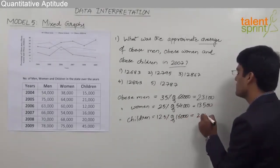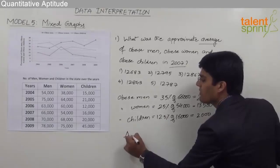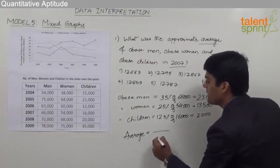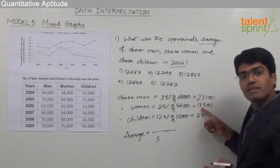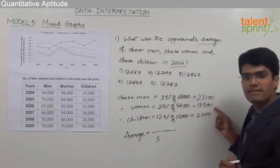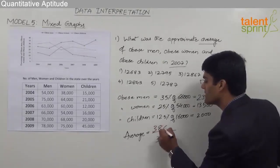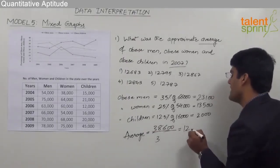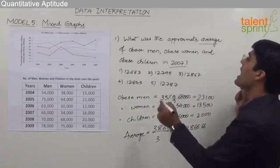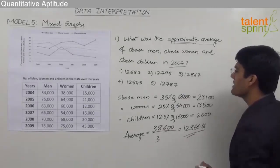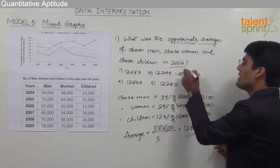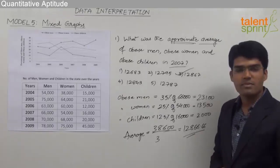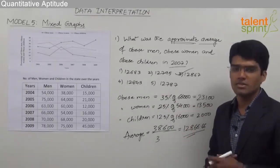12.5% is 1/8, so 1/8 of 16,000 equals 2,000. The average of obese men, women, and children is the total divided by 3. The total is 23,100 plus 13,500 plus 2,000, which equals 38,600. Dividing 38,600 by 3 gives approximately 12,866.66, which rounds to 12,867. So the answer is option 3, that is 12,867.